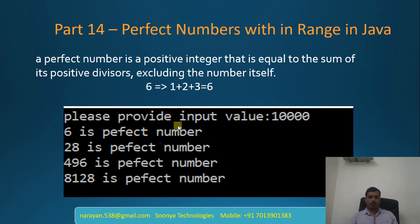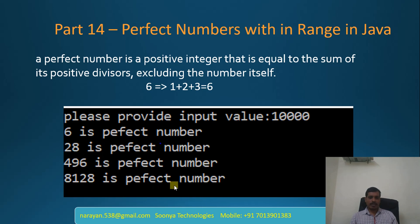If we provide input as 10,000, then we need to find perfect numbers from 1 to 10,000. Here 6 is a perfect number, 28 is a perfect number, 496 is a perfect number, and 8128 is a perfect number. We are going to discuss two approaches in this program: one is using a for loop, and the second one using a while loop.